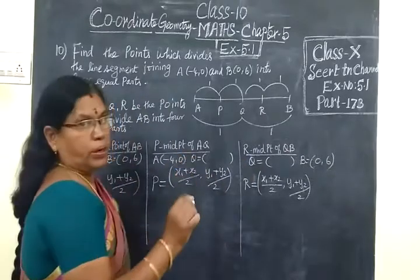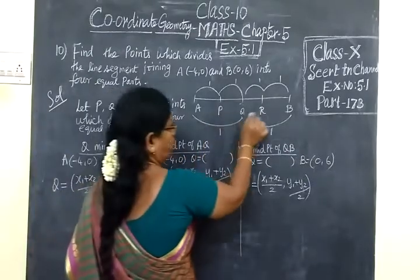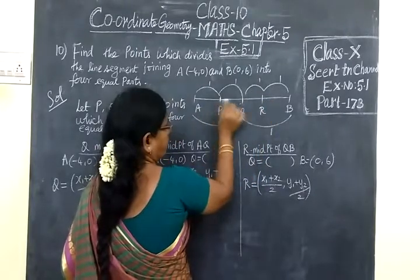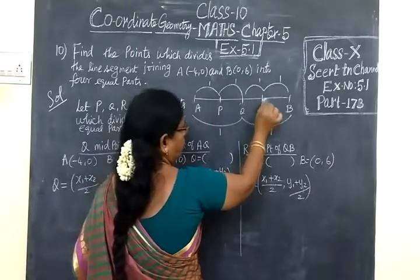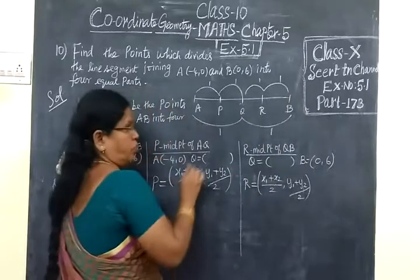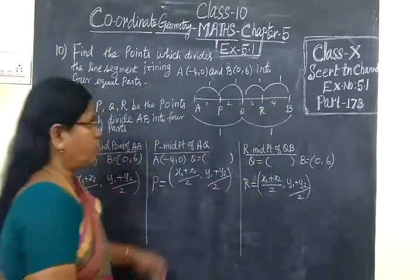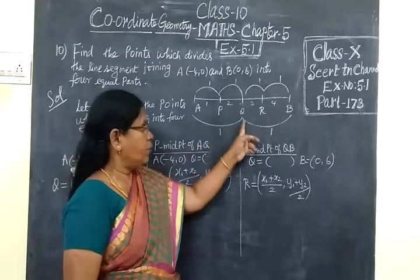In the 4 equal parts, we mark points P, Q, R such that AP equals PQ equals QR equals RB. So we are marking P, Q, R to divide into 4 equal parts.